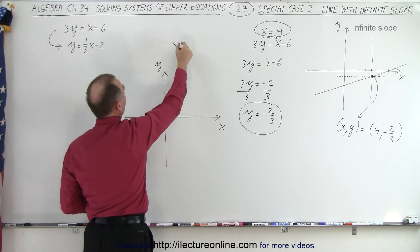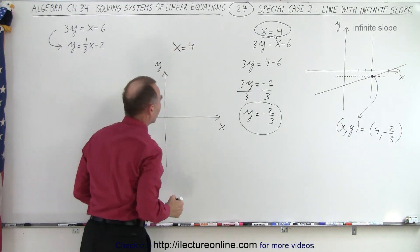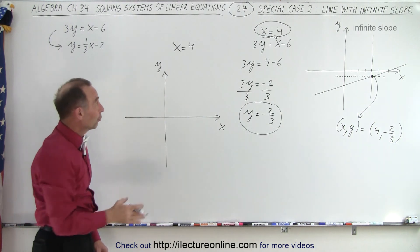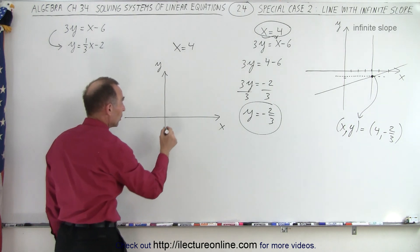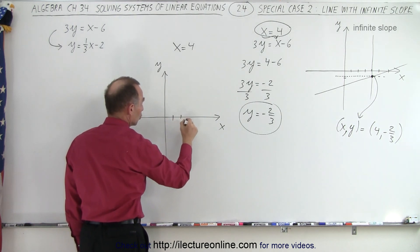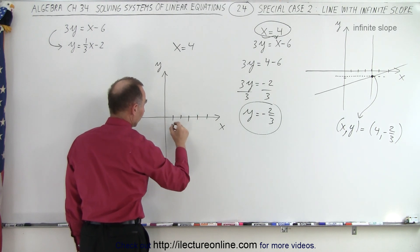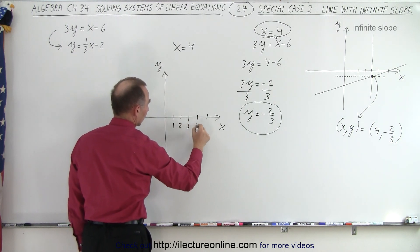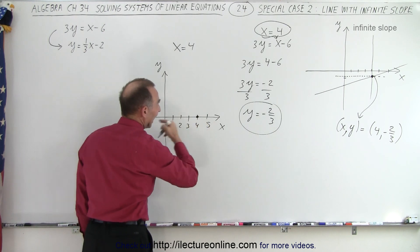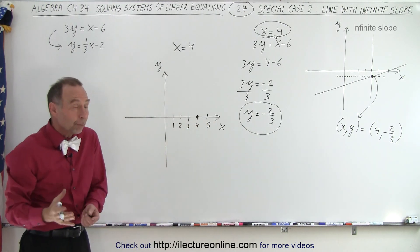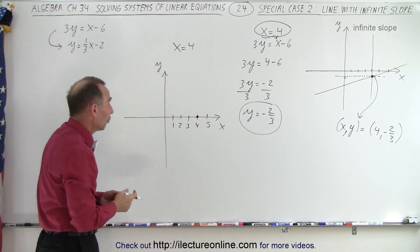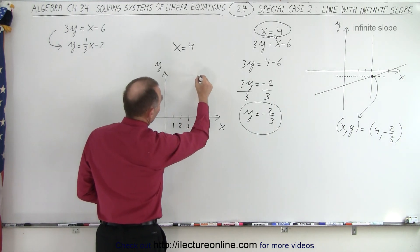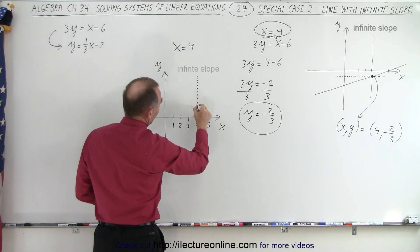And we have the equation x equals 4. So we want to find all the points where that is true. So when we mark this as 1, 2, 3, 4, 5 and so forth, we definitely realize that this point right there, x is equal to 4. But what other points have the value x equals 4?